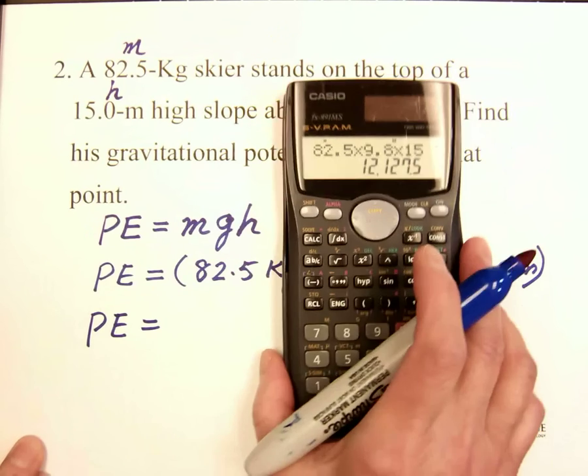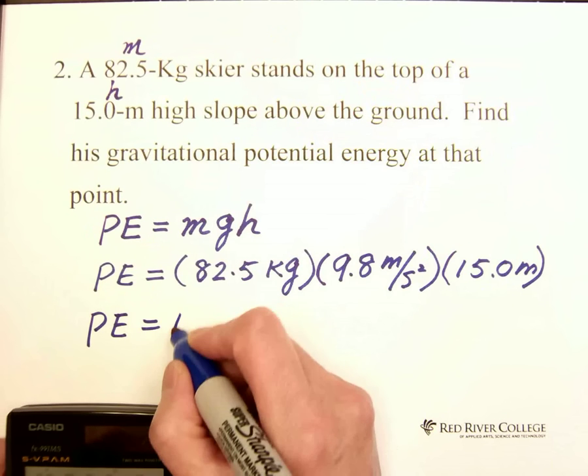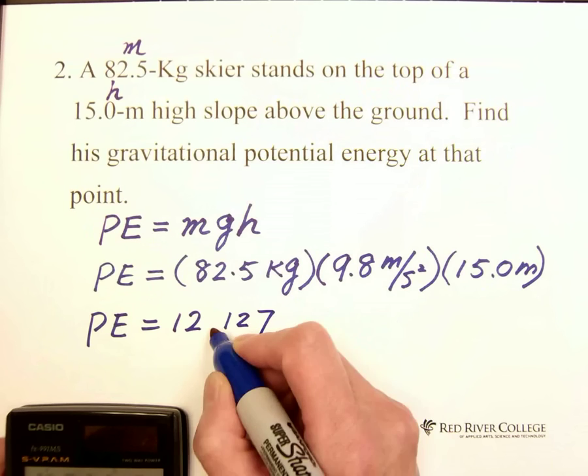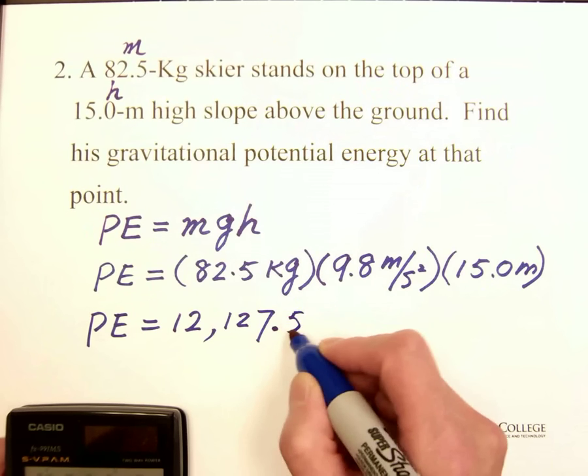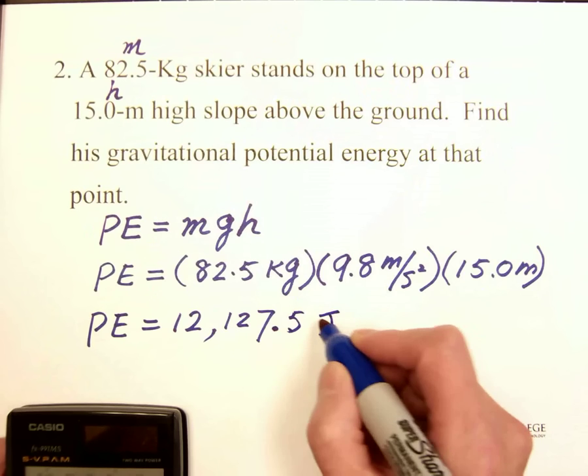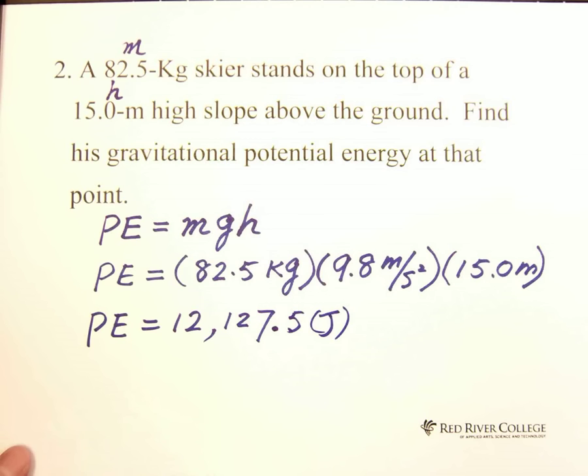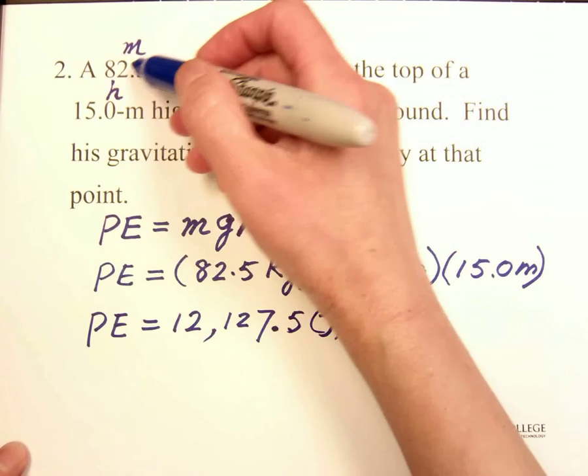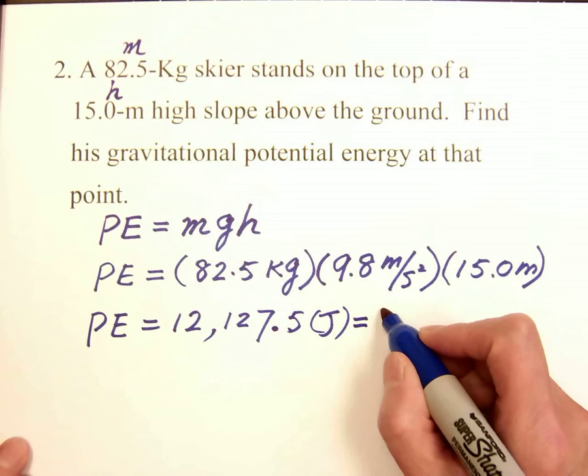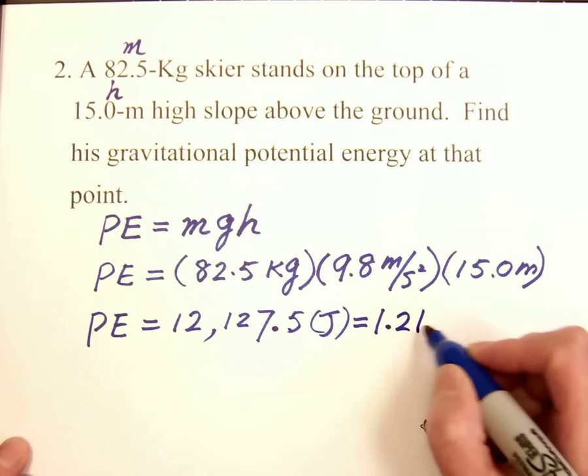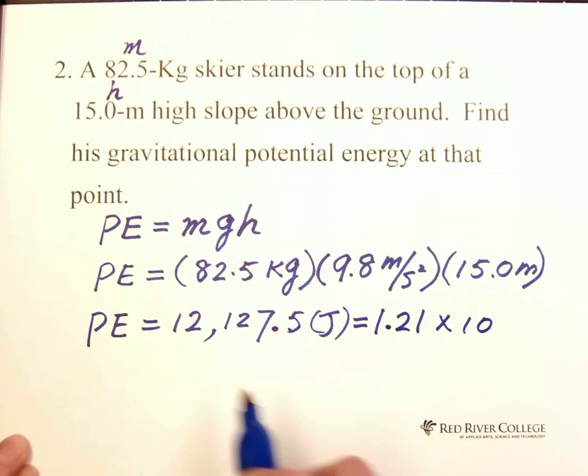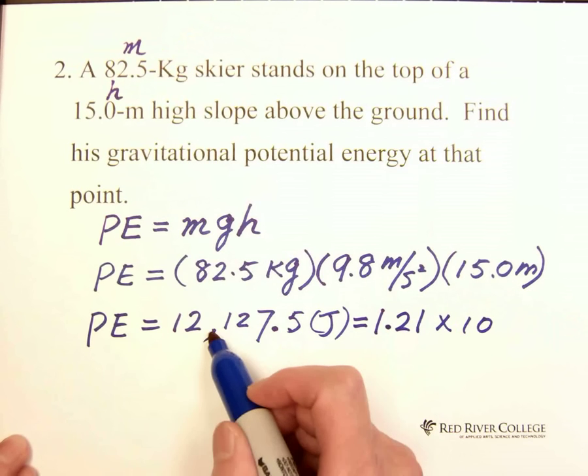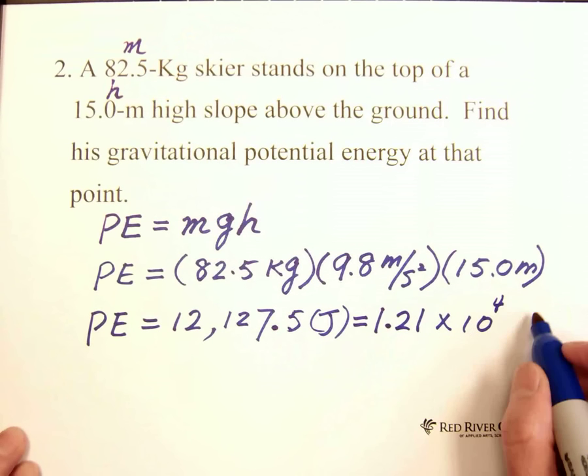The answer is 12,127.5 joules. If we write scientific notation and follow three significant digits, we write 1.21 times 10 to the 4 exponent joules.